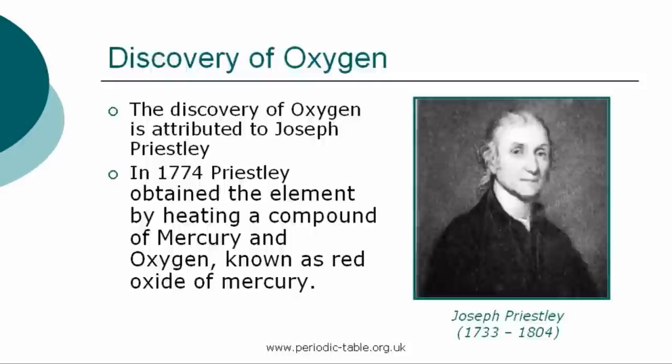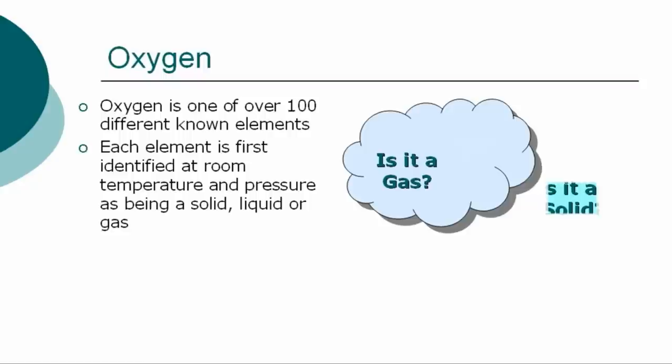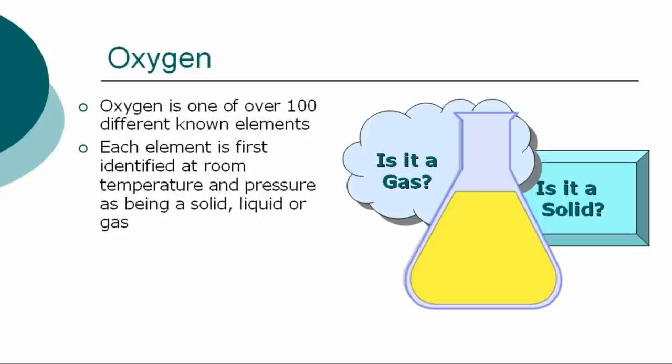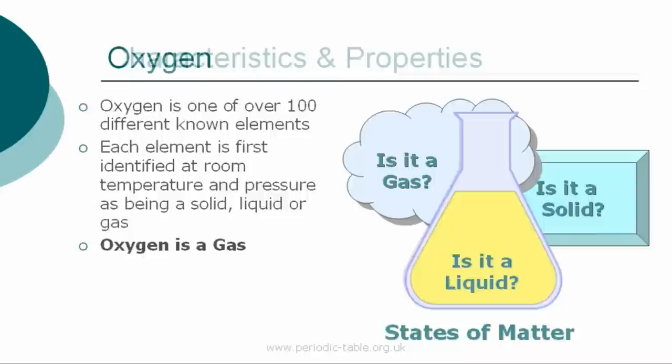The element oxygen is one of over 100 different chemical elements that are known to modern chemistry. Each element is first identified at room temperature and pressure as being a solid, liquid, or gas, referred to as states of matter. Oxygen is a gas at normal room temperature and pressure.